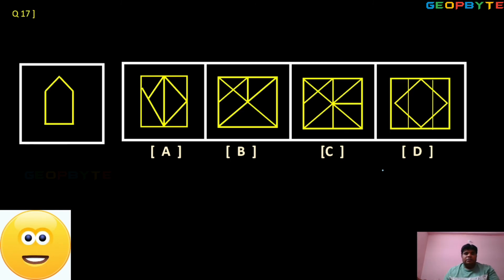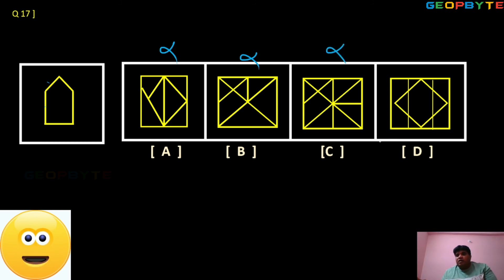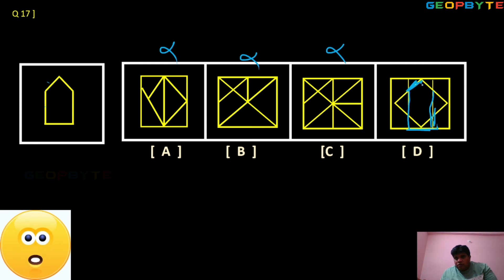One, two, three, four, five — pentagon. Looking like a pentagon. In option A, not existing. Option B, not existing. In option C, clearly observe — your visual power is compulsory — not existing. In option D, check it here — option D is the right answer.